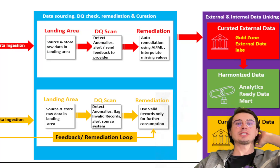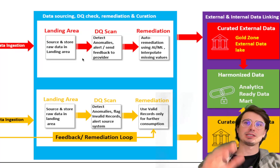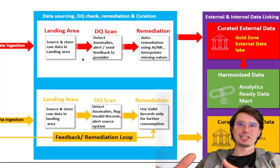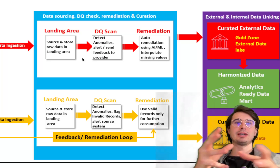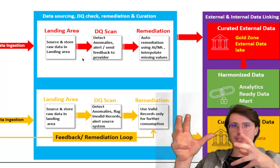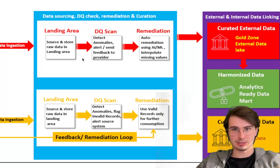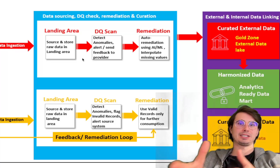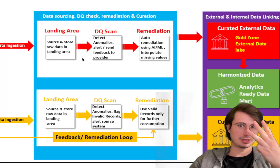Some tools you might want to use for this are data profiling tools like Soda or Great Expectations to regularly analyze and evaluate data quality as data is ingested. These tools can detect anomalies, missing values, outliers, and other quality issues before they impact downstream applications. Implementing quality checks at various stages of data ingestion and transformation will ensure consistency, completeness, and correctness — the three Cs.